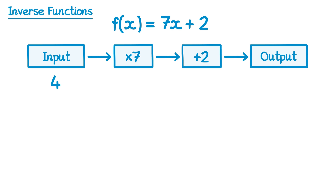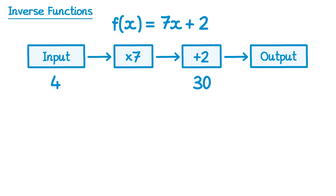We start with 4, we multiply by 7 which gives you 28, and then add 2, that gives you 30, and that's your output. So when the input is 4, the output is 30.